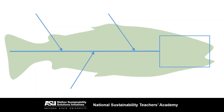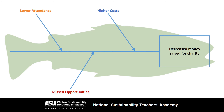First, we identify the central problem we want to fix. In my case, it's that the sustainability fair raised less money for charity. Next, we identify the primary causes of our central problem. These are general categories into which all the contributing factors we identify can be grouped. When I researched why last year's fair failed to meet its fundraising goals, I identified three primary causes: lower attendance, higher costs, and missed opportunities.